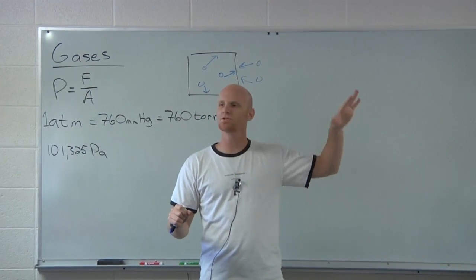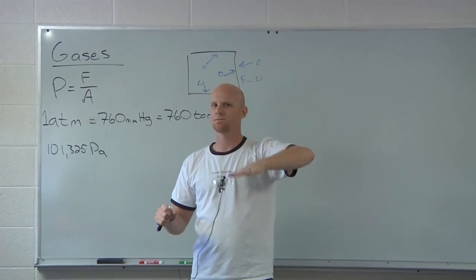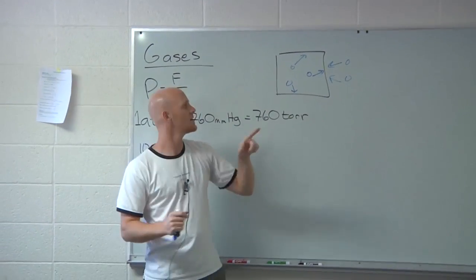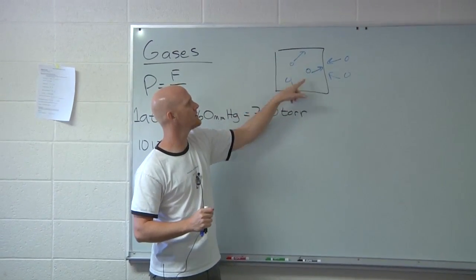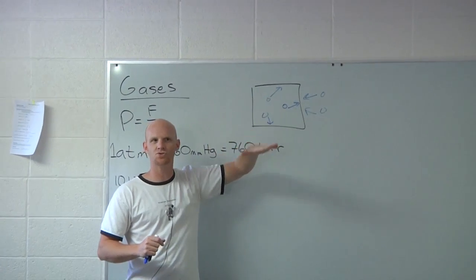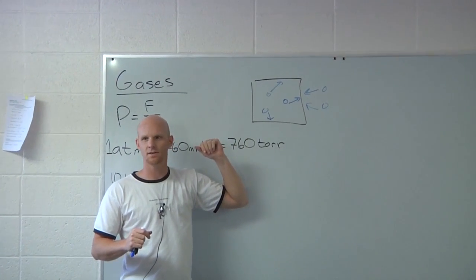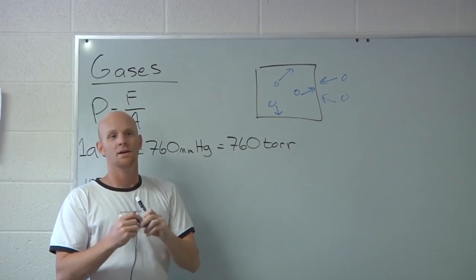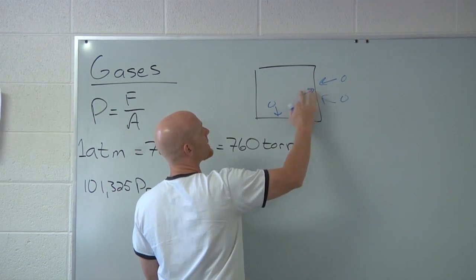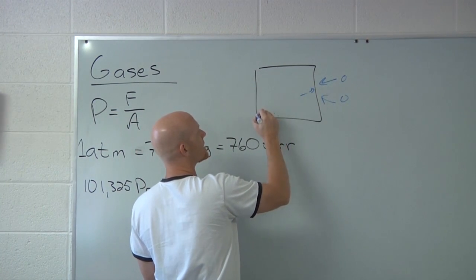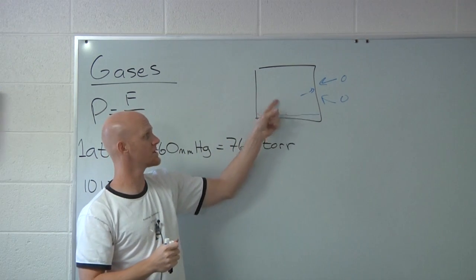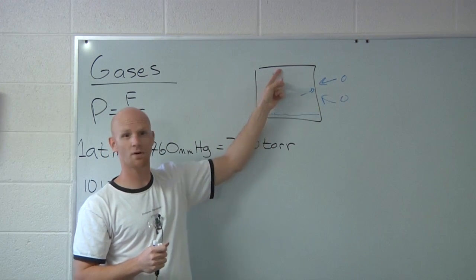Pretty soon the superheated steam would get colder and colder. As soon as it hits 100 degrees, all the steam molecules — what would happen once the temperature dropped below 100 degrees Celsius? They would condense. And all of a sudden, the gas molecules that were bouncing around inside the 55-gallon drum were all down at the bottom.